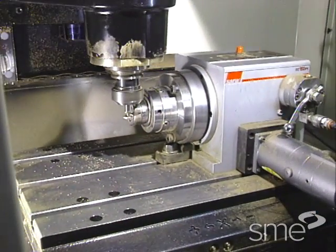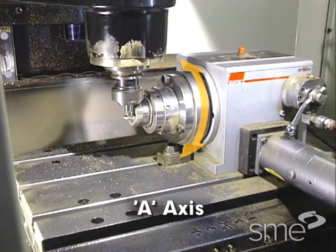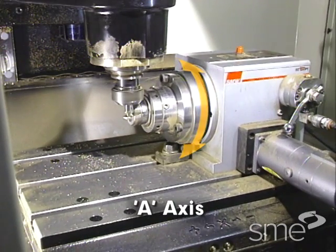If a rotary table is added on the machine table, then there is a fourth rotary axis, which is called the A axis.